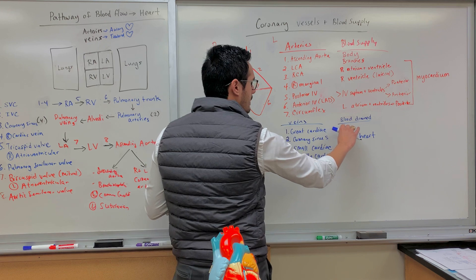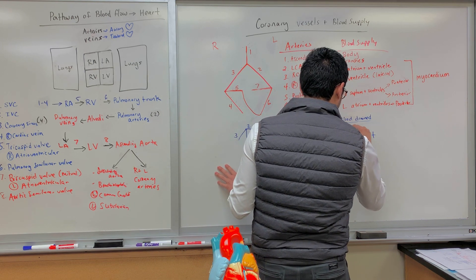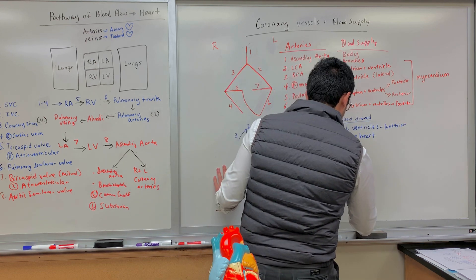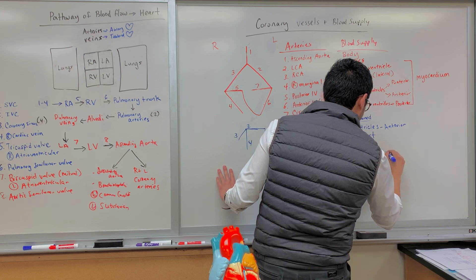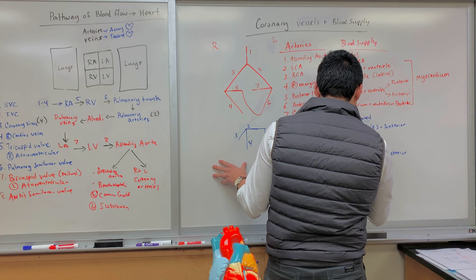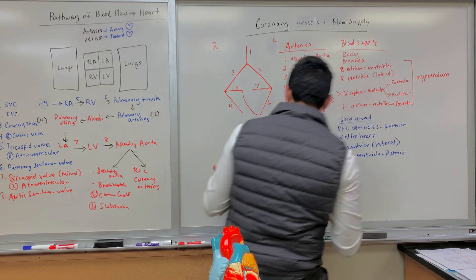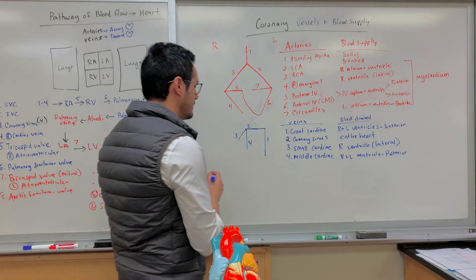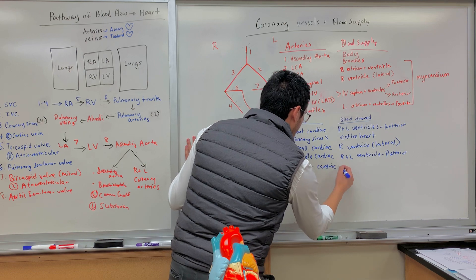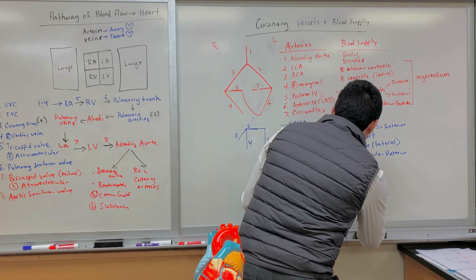Now, what does each vein drain? The great cardiac vein drains the right and left ventricles on the anterior side. The middle cardiac vein drains the right and left ventricles on the posterior side. The small cardiac vein drains the right ventricle on the lateral side. One other blood vessel not included in the schematic is the anterior cardiac vein — shown here on the model — which drains directly into the right atrium.